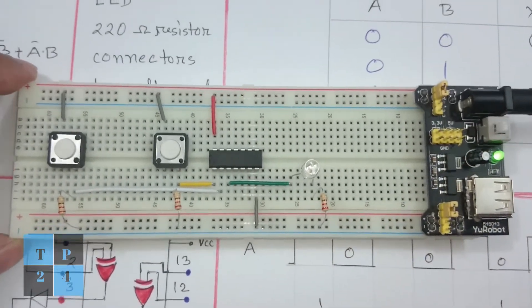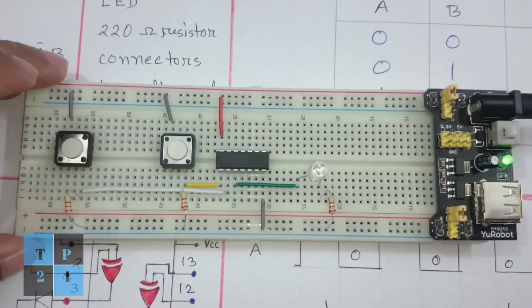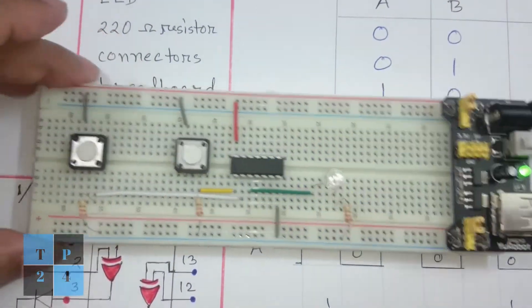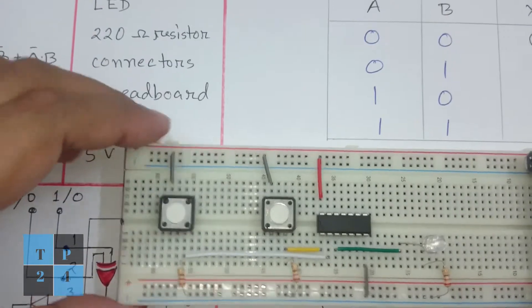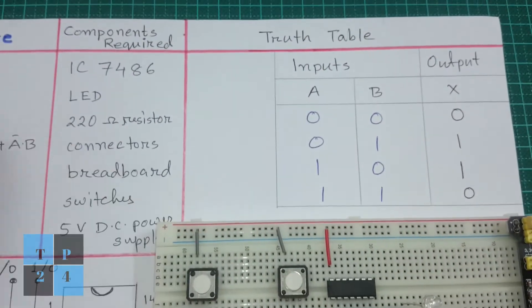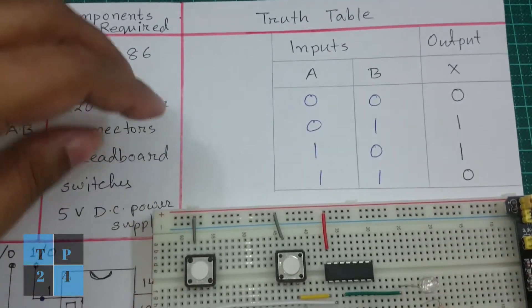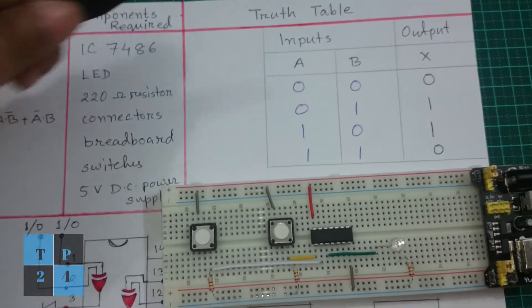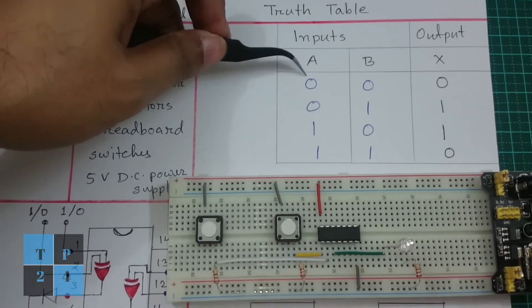And here if I check the output with the truth table I am going to show you this is like input A is 0, this is 0 and input B is 0, this is 0 so output is 0, LED is off.